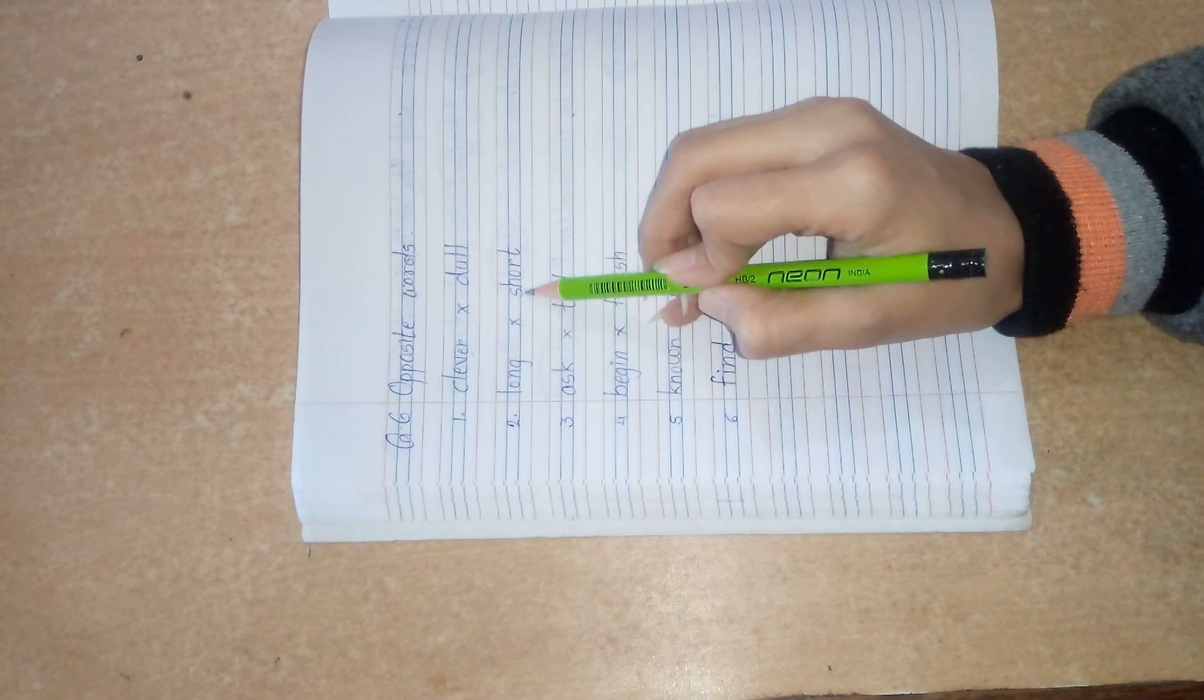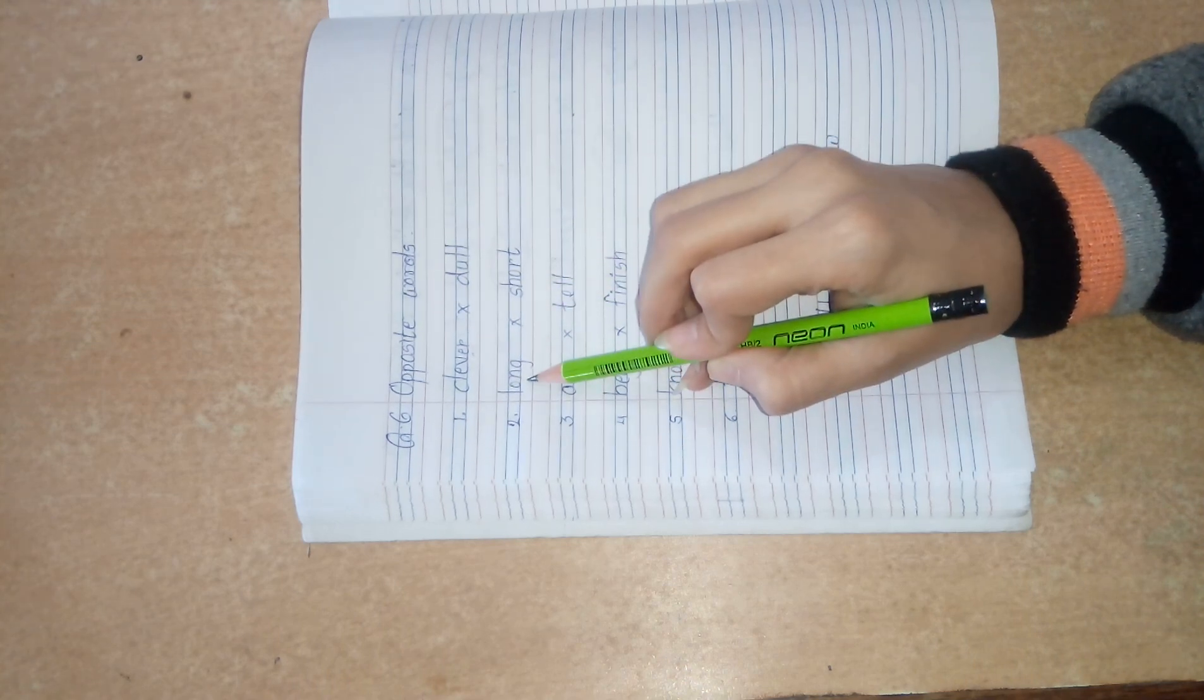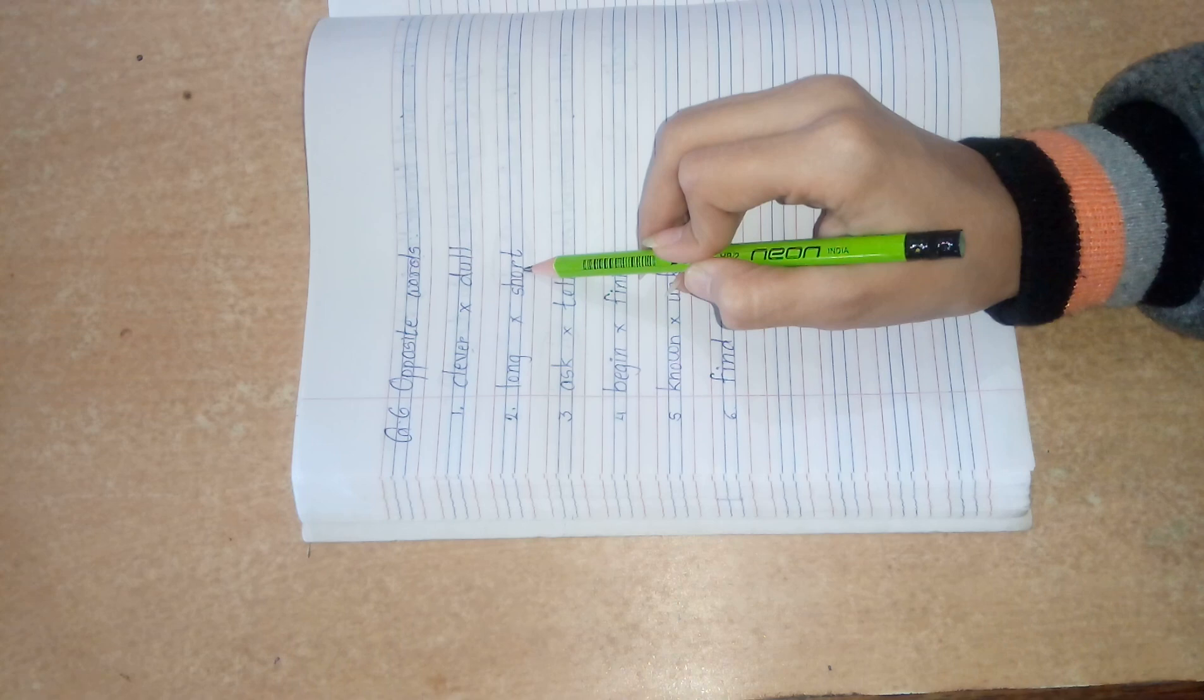2. Long, opposite, short. Long means big. Short means short.